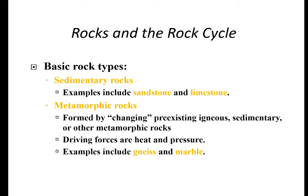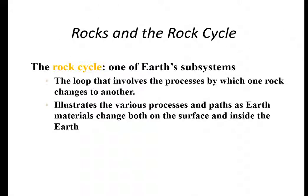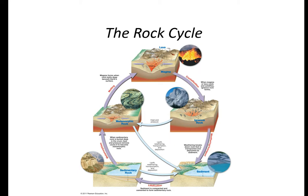Metamorphic rocks are the third type. All metamorphic rocks come from either igneous or sedimentary rocks — they're formed by changing pre-existing rocks, and the driving force is lots of heat and lots of pressure. An example is marble. Here's a sandstone rock from Zion National Park in Utah — you can see the grainy nature with sand compacted together into layers. The rock cycle, just like the hydrological cycle, is a loop involving the processes by which one rock changes to another: magma comes up from below, reaches the surface as lava, crystallizes and hardens to form igneous rocks, which can compact to form sedimentary rocks, and then metamorphic rocks — and the whole cycle continues.